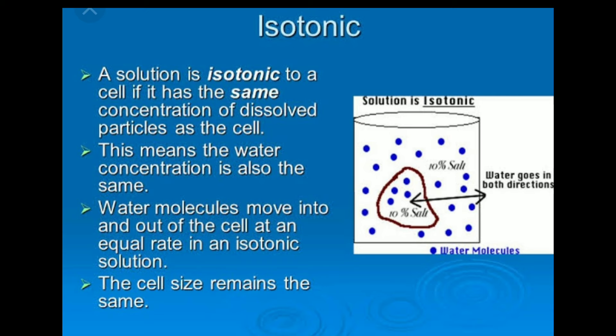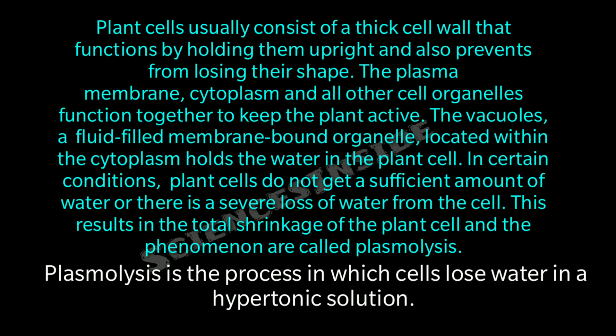Plant cells usually have a thick cell wall that holds them upright and prevents them from losing their shape. The plasma membrane, cytoplasm, and all other cell organelles function together to keep the plant active. The vacuole — a fluid-filled membrane-bound organelle located within the cytoplasm — holds water in the plant cell.